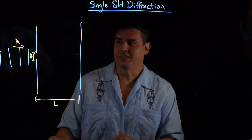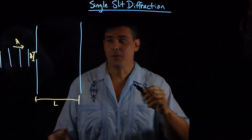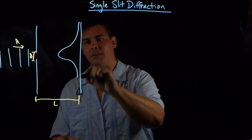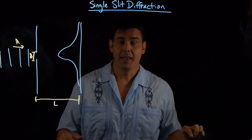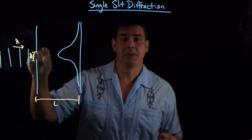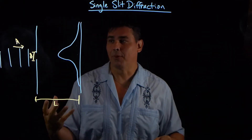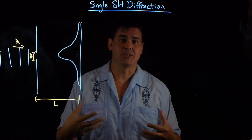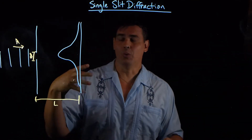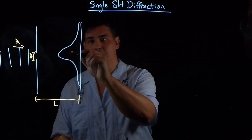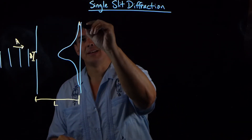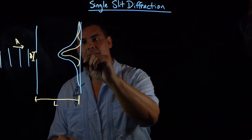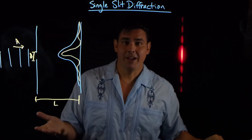So what would you expect to see if I shine light through a single opening? Maybe you would expect that I'd get a big bright spot in the middle and then it would kind of taper off. And you would be right if this opening is large. But when the opening is on the same order as the size of the wavelength, that's when you start to see diffraction. So what you're really going to see is a big bright spot in the middle, and on the outsides a bright spot, then a dark spot, then a big bright spot in the middle, then a dark spot, then a bright spot — you get a diffraction pattern.